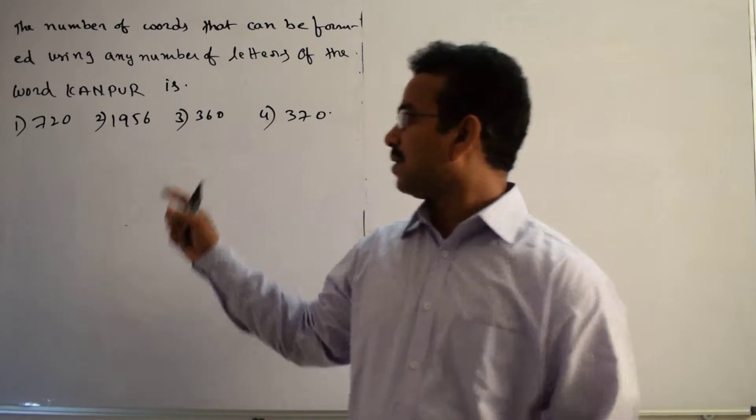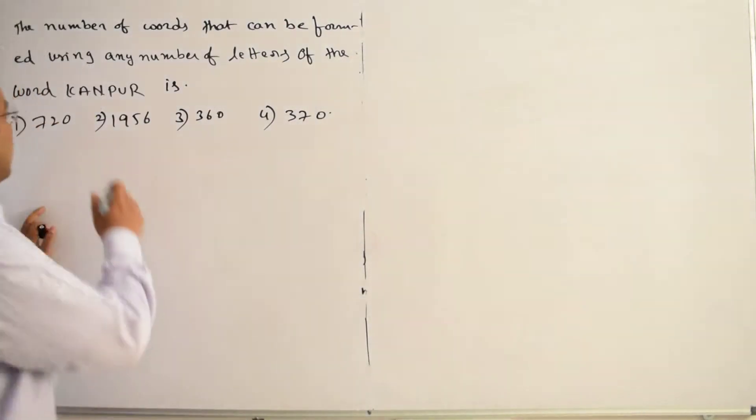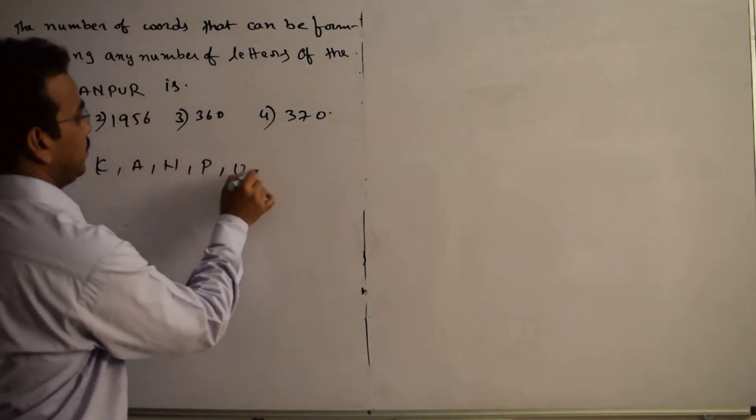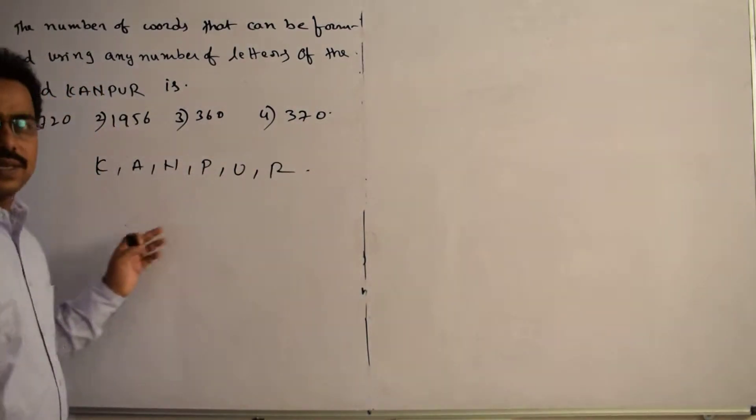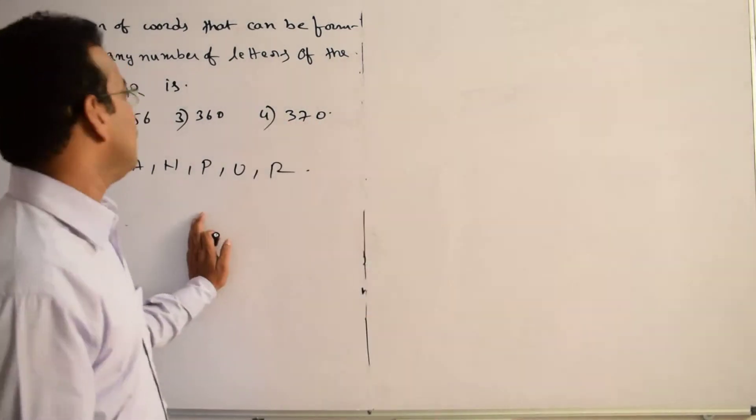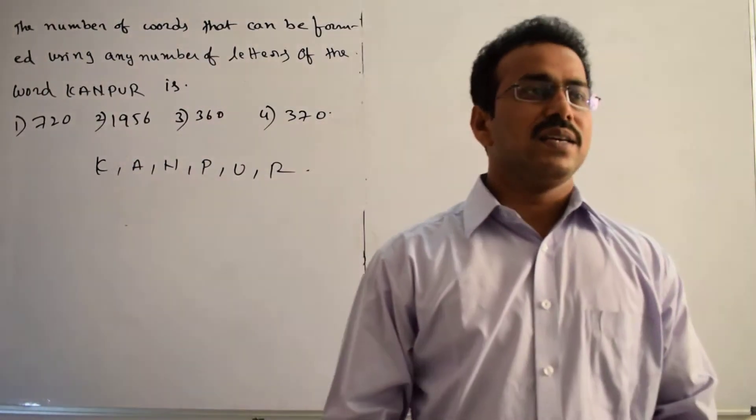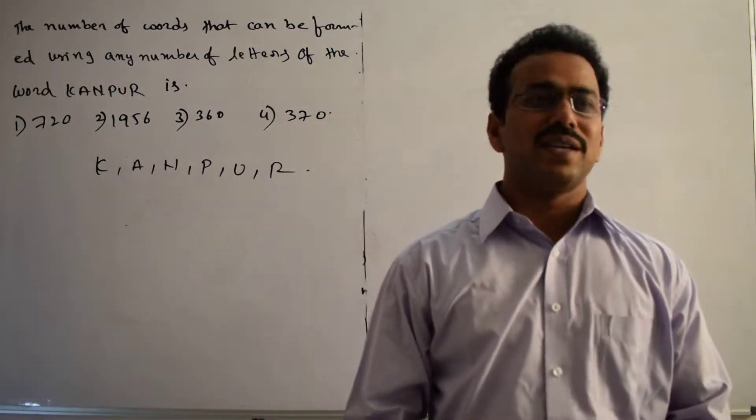Here, what are the given letters? Let me write here. The letters from the word Kanpur means K, A, N, P, U, R. We are going to use these letters to form a word. But in the given problem, they did not specify the word contains exactly how many letters.